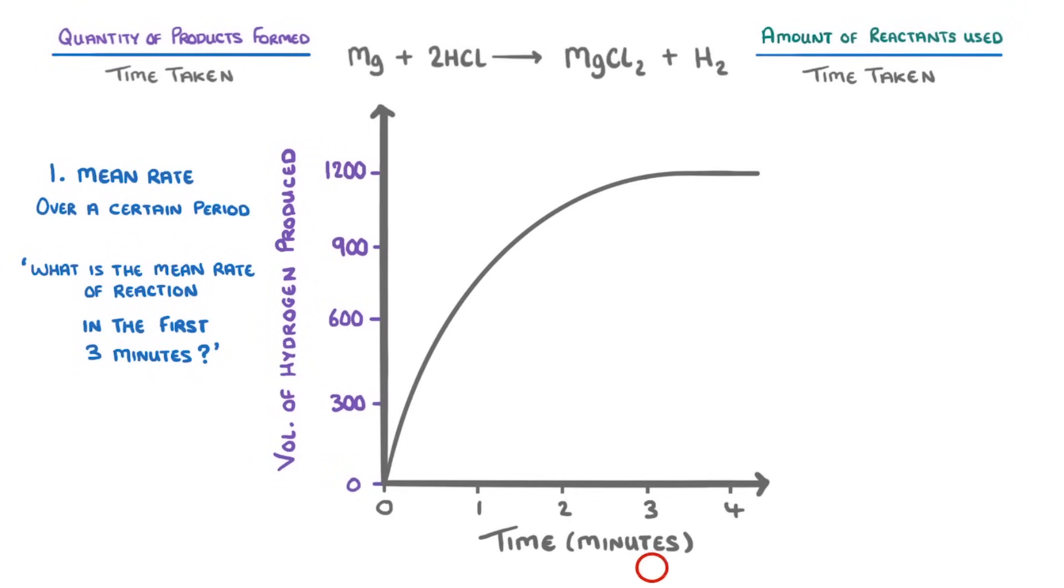So we find 3 minutes on the x-axis, and then draw up a dashed line to see where it intersects our curve. Then we draw another line from this point across to the y-axis to find that 1200 cm³ of hydrogen was produced.